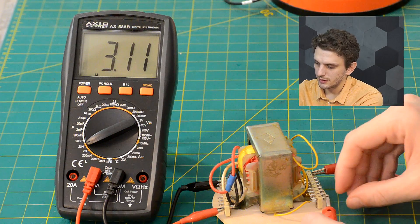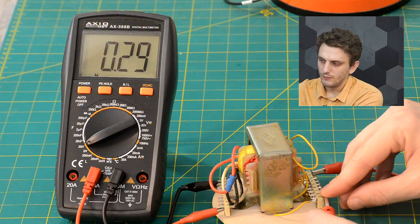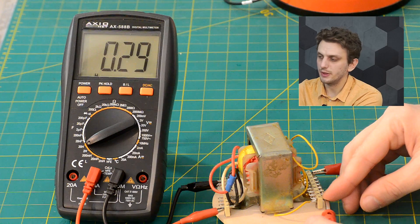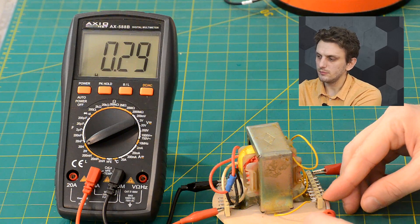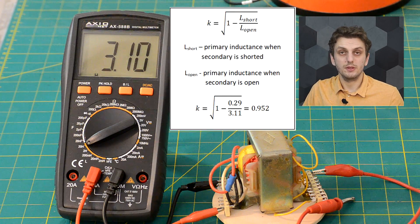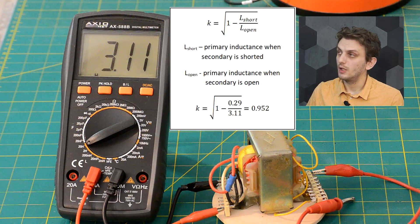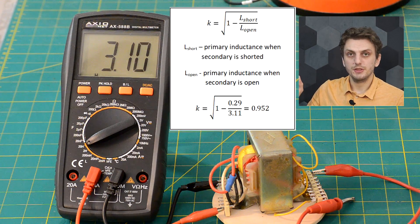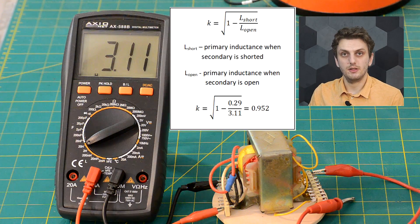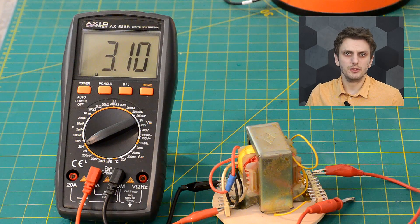So if I do this the inductance that I measure drops to 290 to 300 millihenry. And based on the two values we can work out exactly what the coupling factor is between the primary and secondary side. So based on these equations we can tell that this transformer has a coupling factor of about 95-96 percent. Not great not terrible.